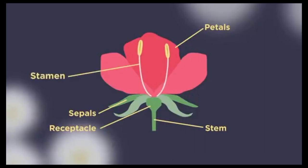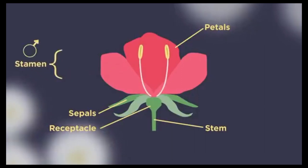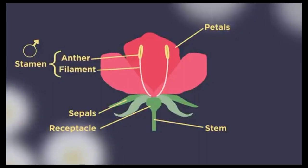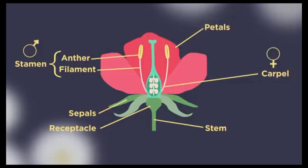The stamen is the male part of the flower. It consists of the anther, where pollen is produced, and the filament, which is the stalk that supports the anther. These structures are responsible for the production and positioning of pollen, the male gametes.